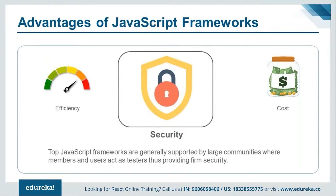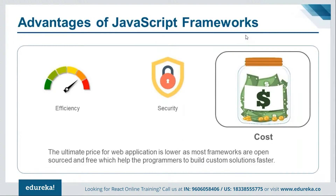The second advantage is security. JavaScript frameworks come with default security documentation and modules that can be integrated into applications. Features like authentication, authorization, encryption, cryptography, and digital signatures are automatically available in most JavaScript frameworks. Many frameworks are also supported by an open source community, so developers can contribute and apply security-related patterns into applications.